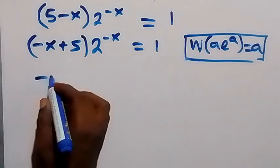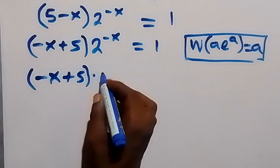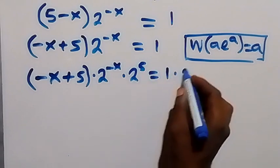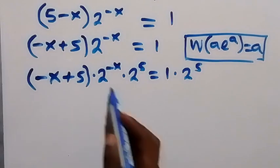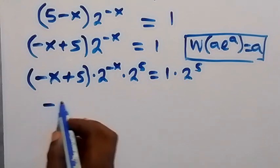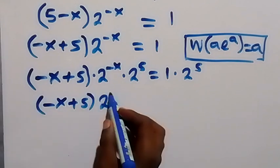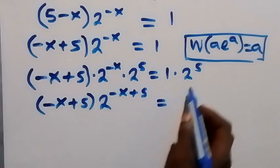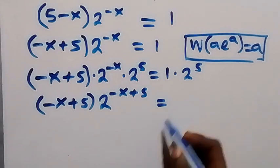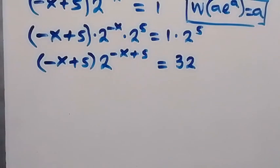So we have minus x plus 5 times 2 raised to power minus x, also times 2 raised to power 5, equals to 1 times 2 raised to power 5. Since we are multiplying powers with the same base, this becomes minus x plus 5 times 2 raised to power minus x plus 5, which equals 2 raised to power 5, which is 32.